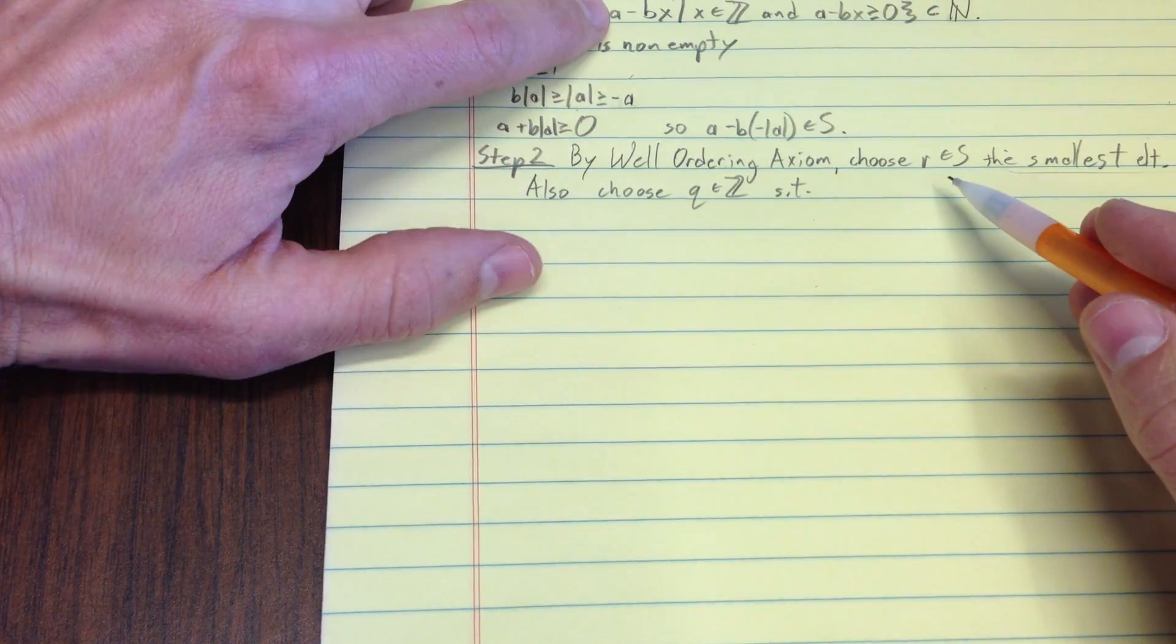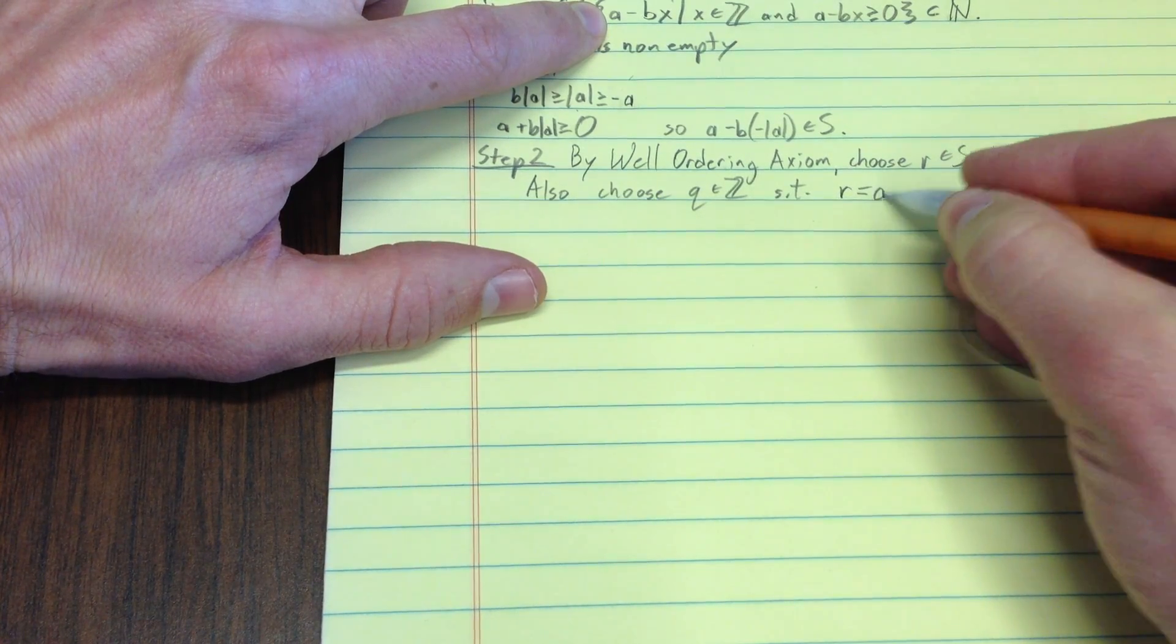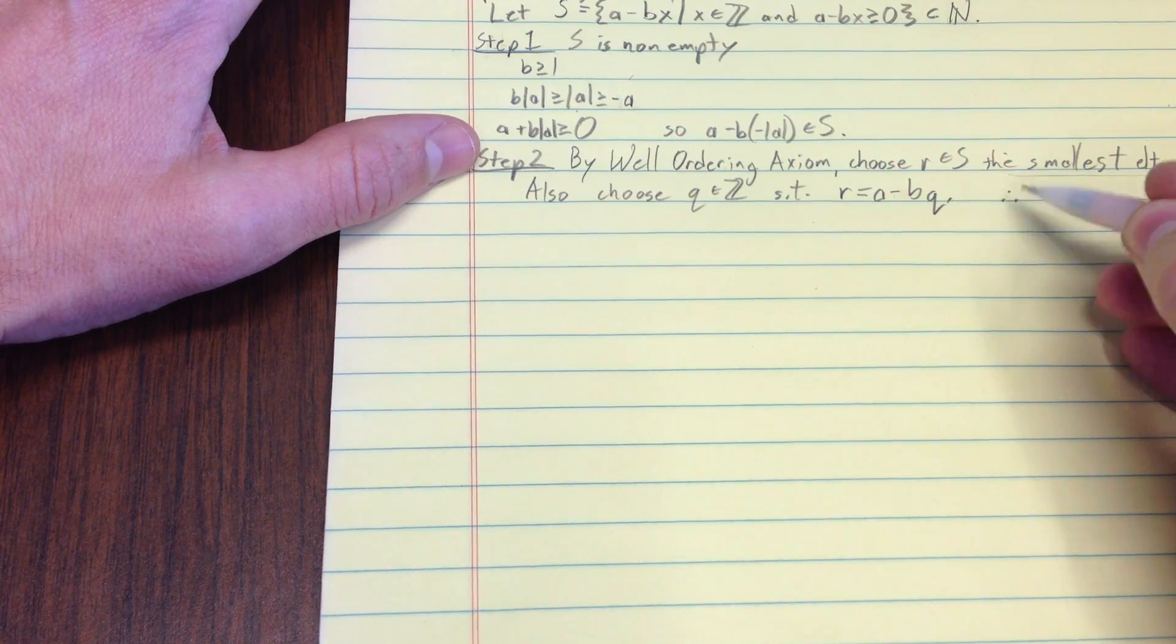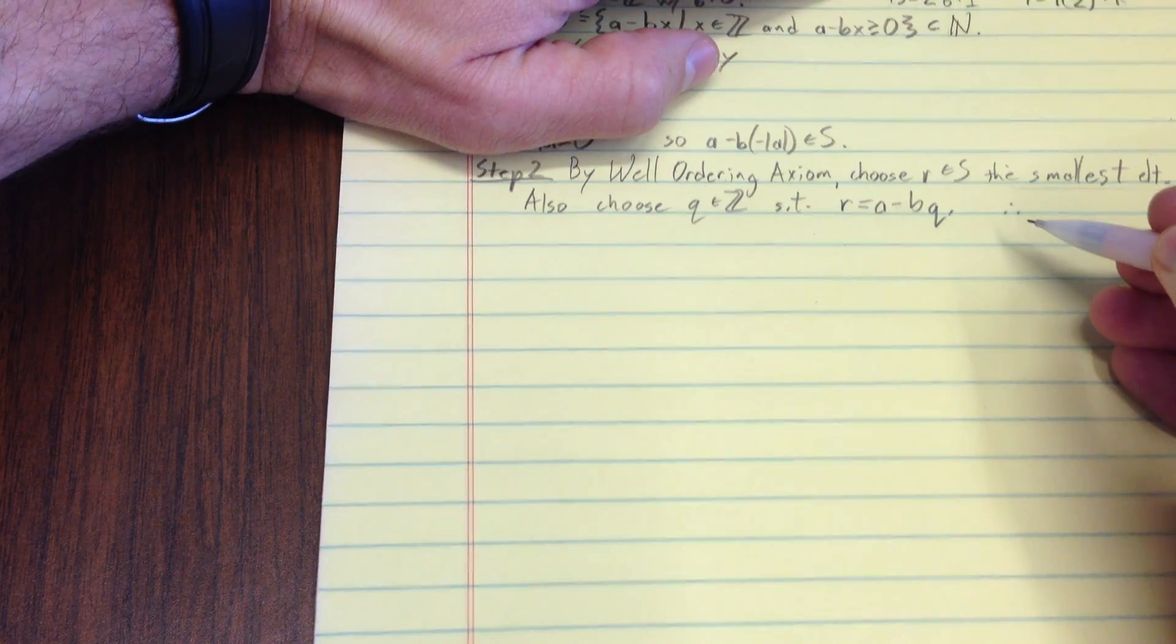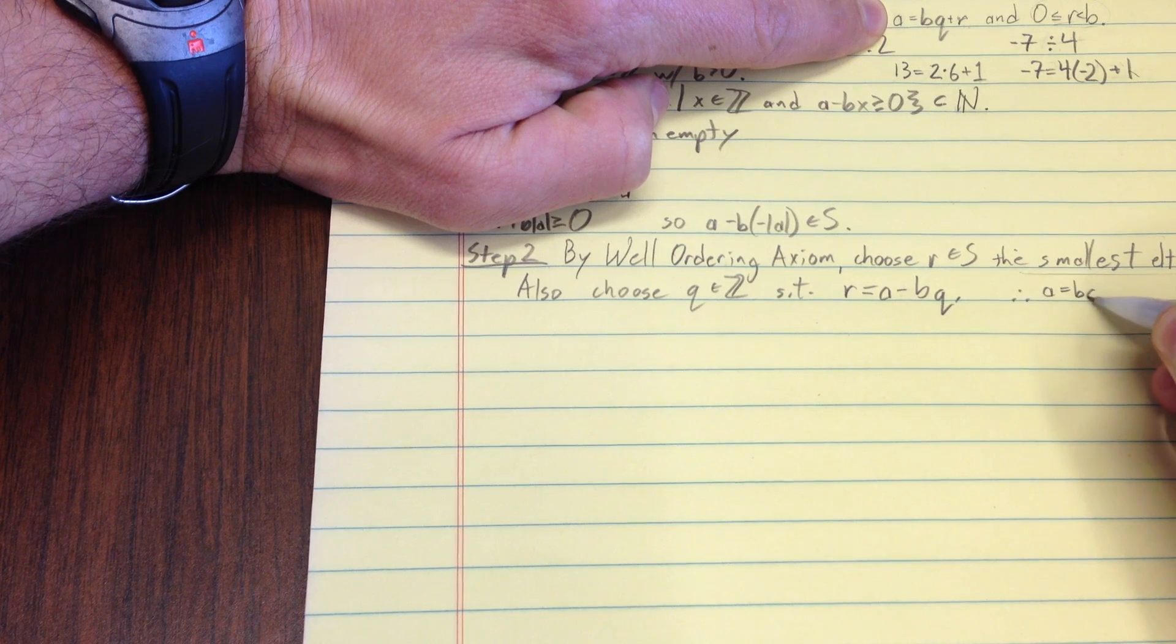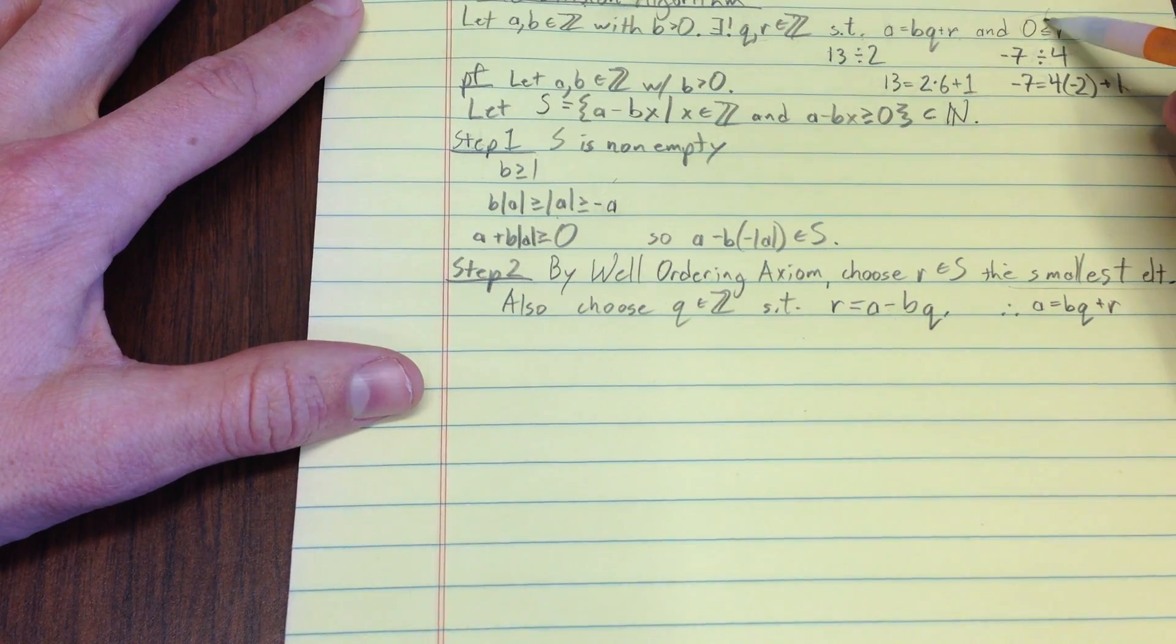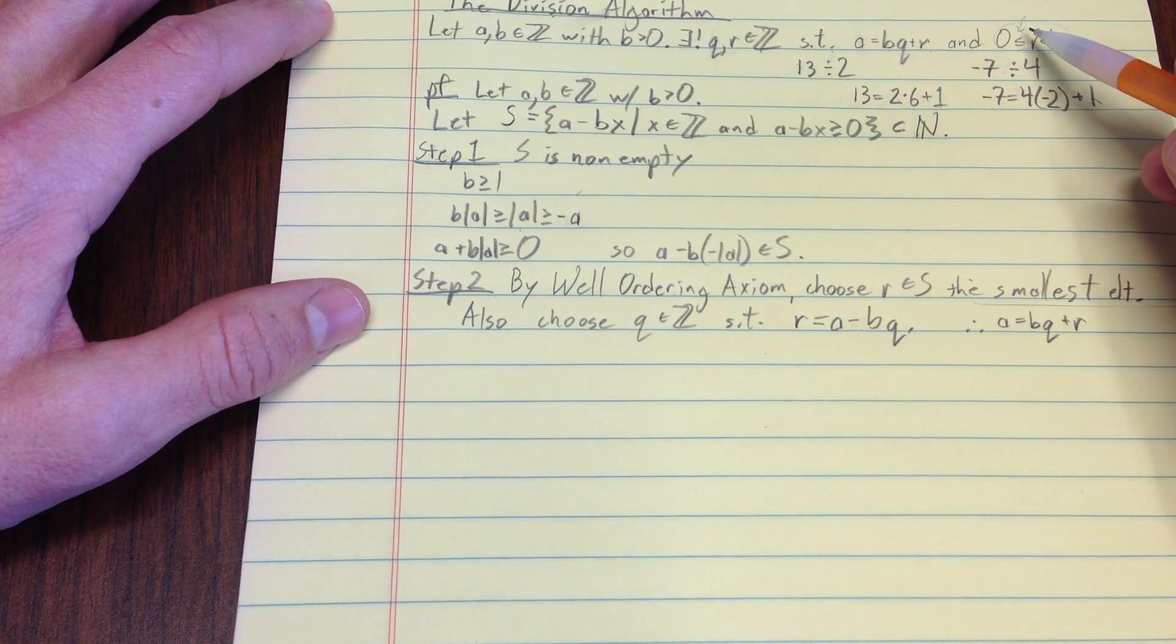r being in s and s being described like that means that there is some value q that we can put in here. Therefore, notice if we sort of reorganize this, therefore we get this condition up here that we were trying for. Therefore, a equals bq minus, sorry, plus r. So, I've got that condition.